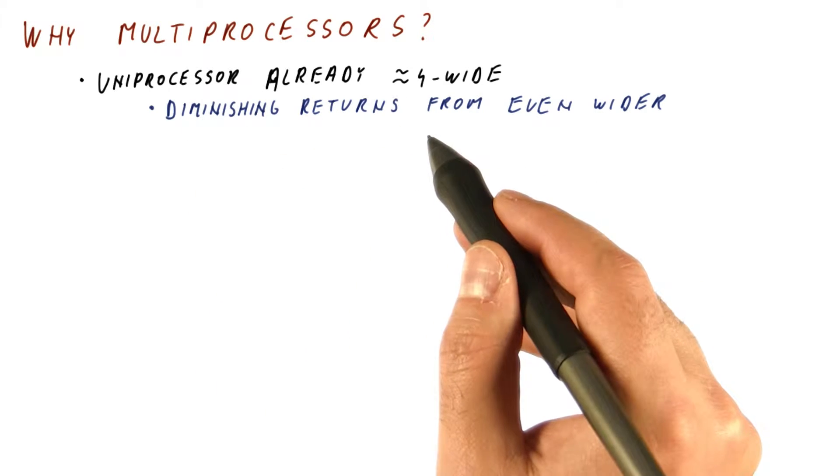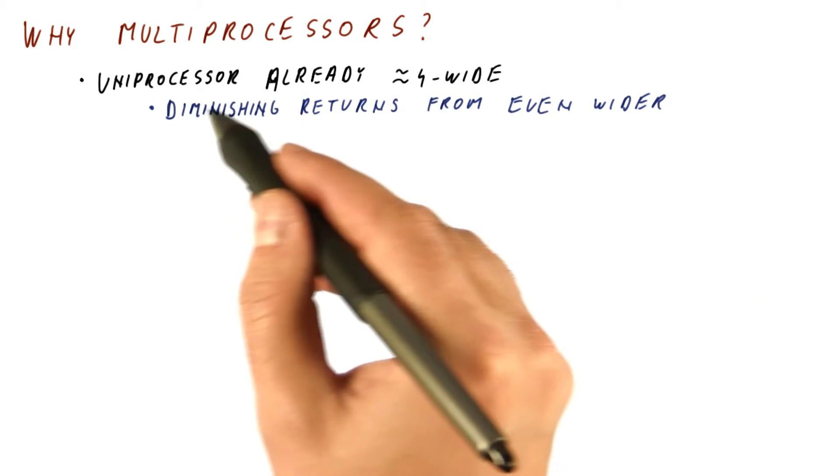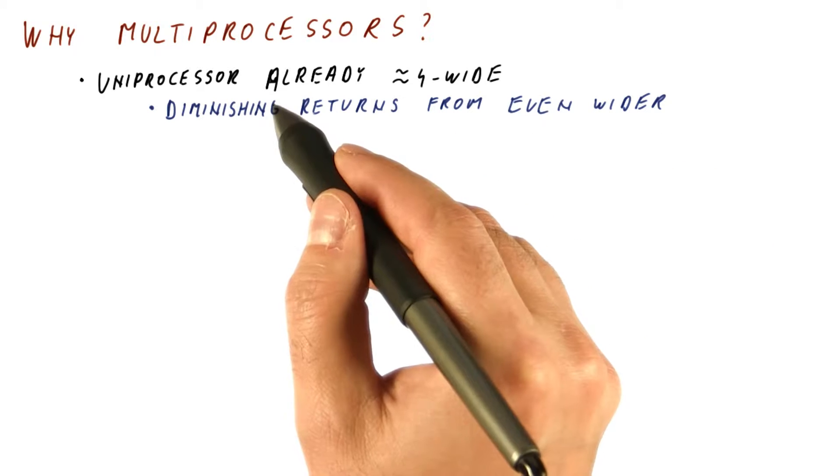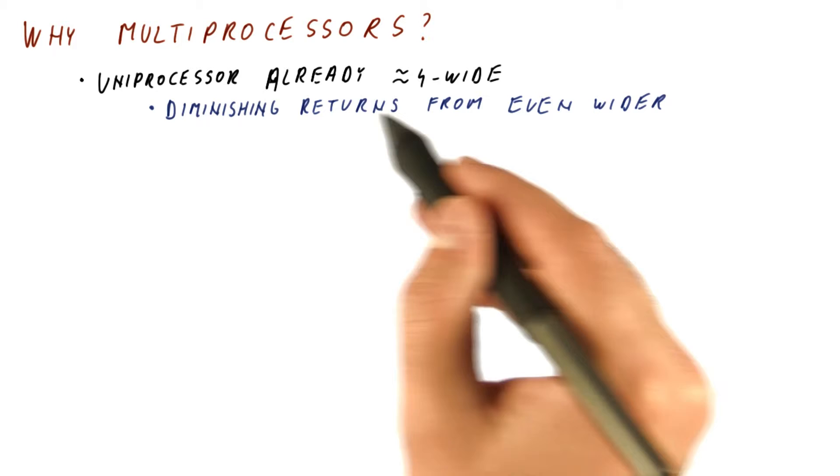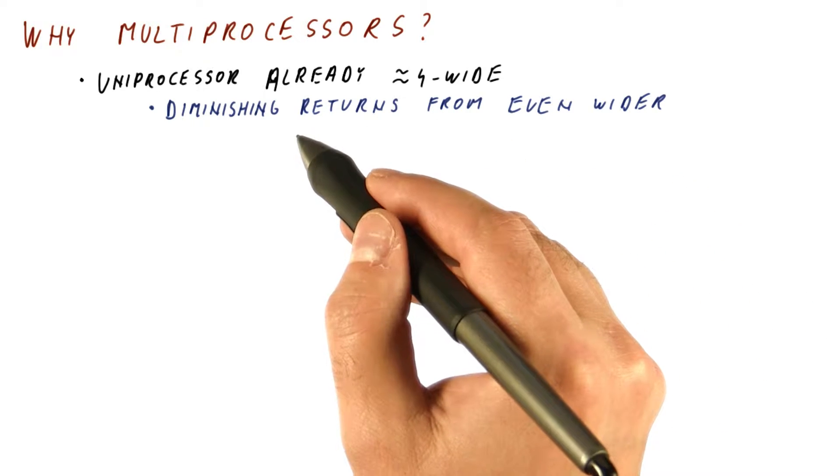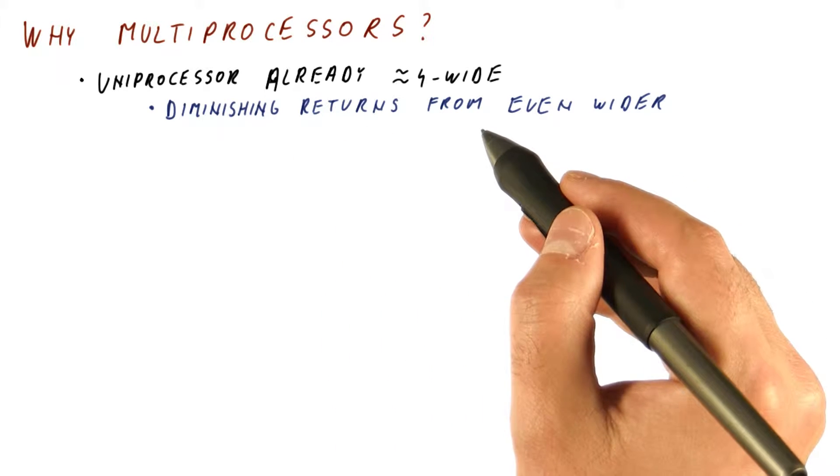If you remember your Amdahl's law, there will be things that benefit from this, such as programs that have a lot of parallelism between instructions. And then there are things that don't benefit from this, such as programs that have a lot of dependencies.